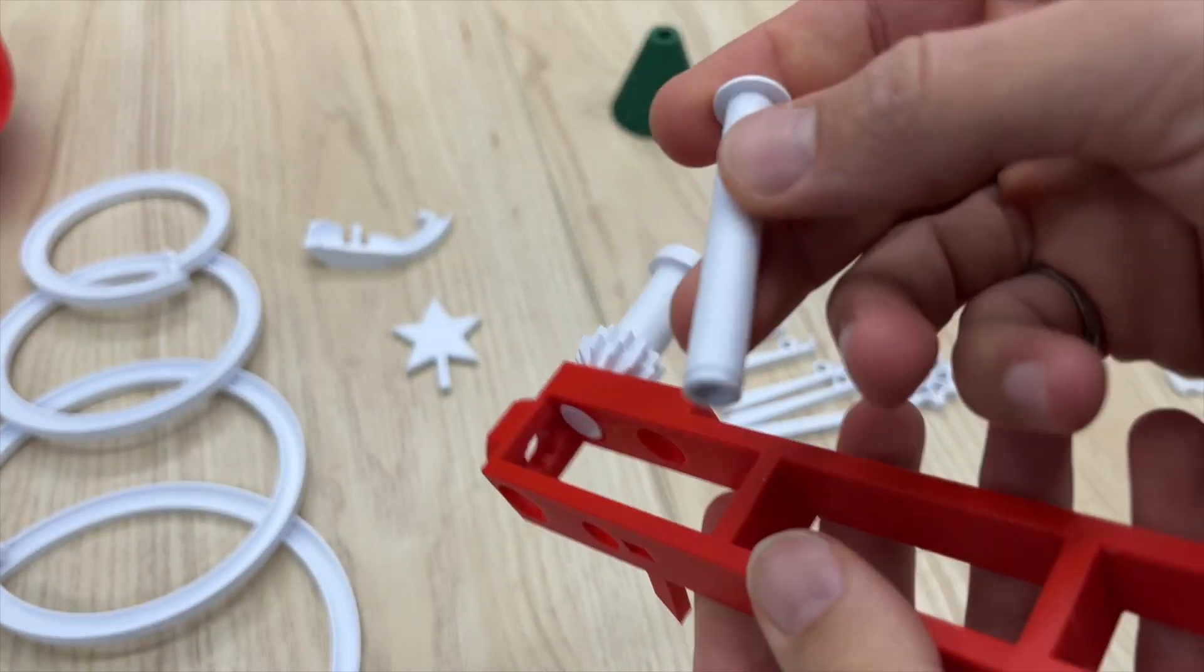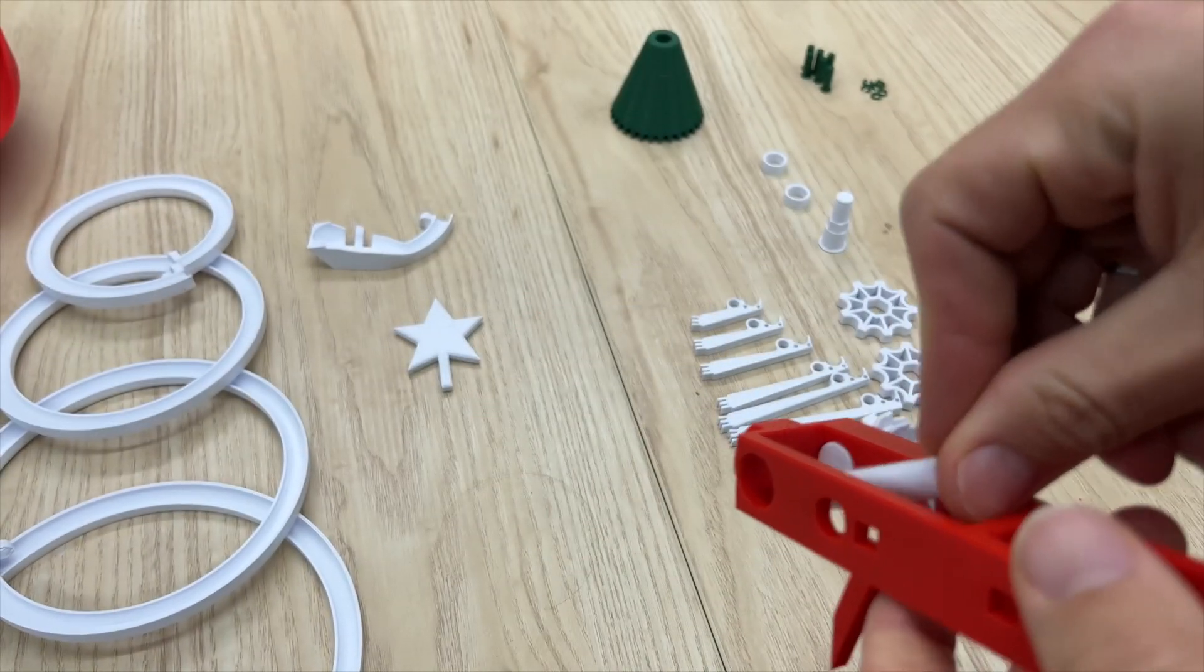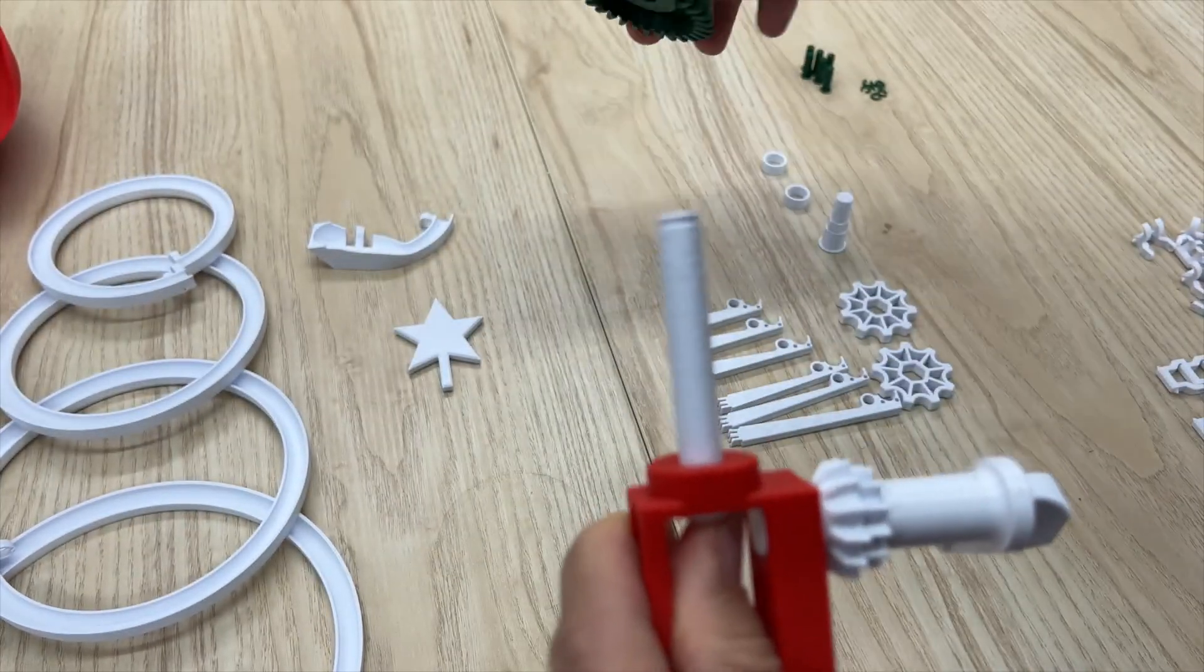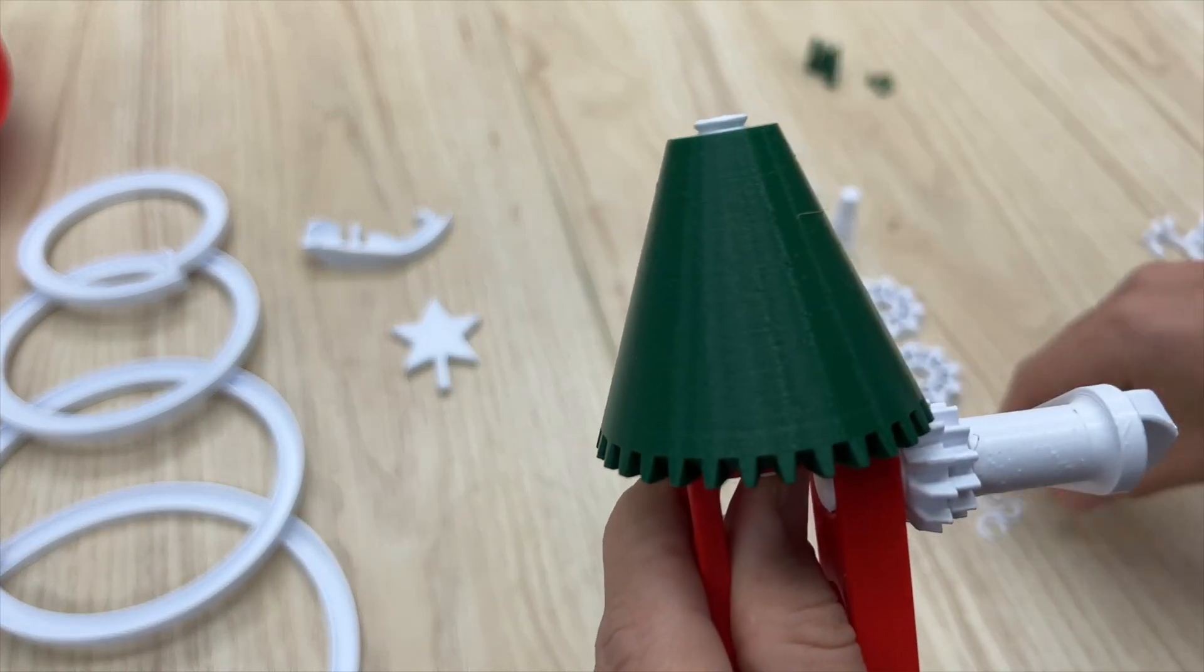Next we're going to grab the long shaft with the hole in the top of it. That goes in through the hole in the top of the stand, push it all the way in, and then hold it from the bottom and you can slide the treetop onto the end of that.